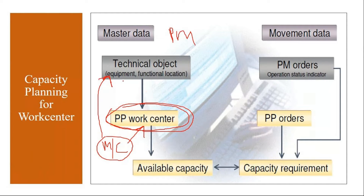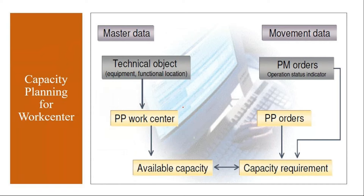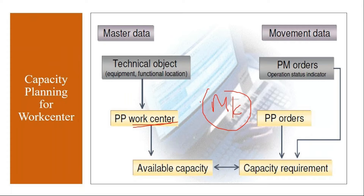So we need to link our PP work center with PM equipment, the Plant Maintenance module equipment. In PP, the production machine is called a work center; in the PM module, it is called equipment. To have the integration, we need to link these two. Creation of equipment is a responsibility of the PM module — we are not doing that. The only thing is we have to link them.